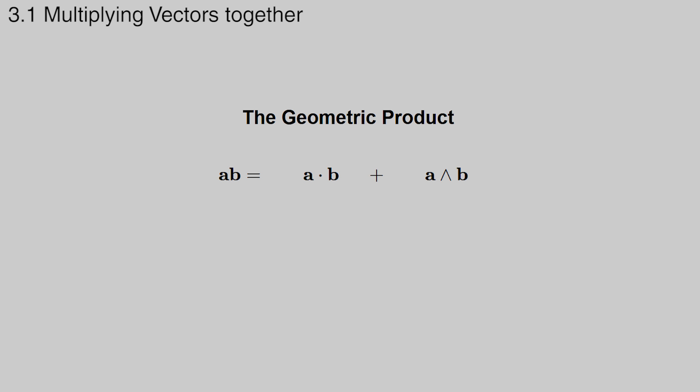In addition, the dot product contains the cosine of the angle between the two vectors, while the outer product contains the sine of the angle. Together, they fully describe the angle between the two vectors, as well as the plane they form.